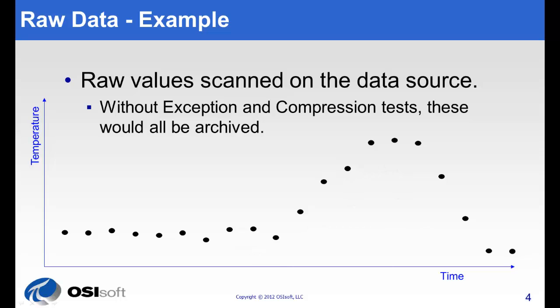So, to see this, it's easy just to see it in action. Here we have some raw values that were scanned at a data source and we're going to apply exception to them.